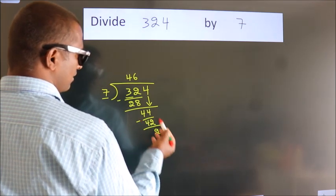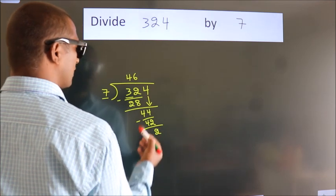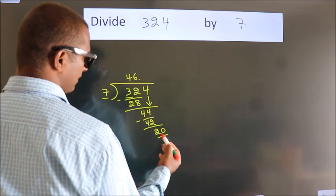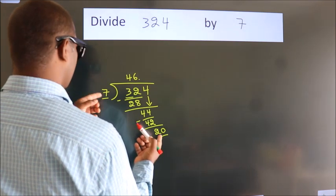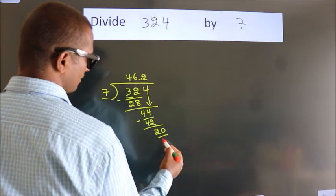After this, no more numbers to bring it down. So what we do is put a dot and take 0. So 20. A number close to 20 in the 7 table is 7 twos, 14.